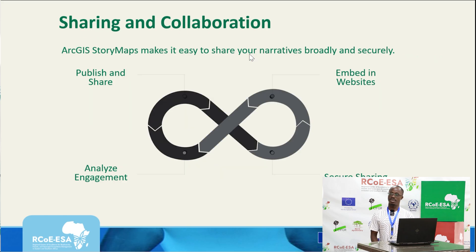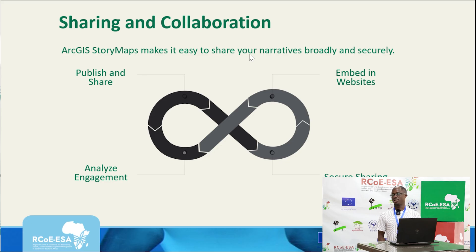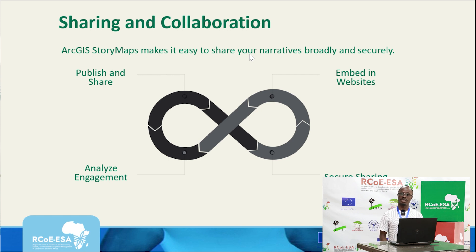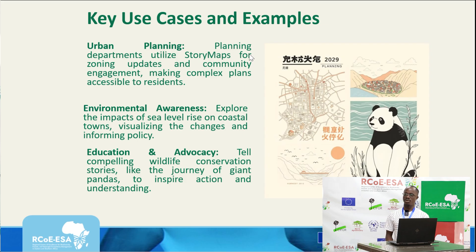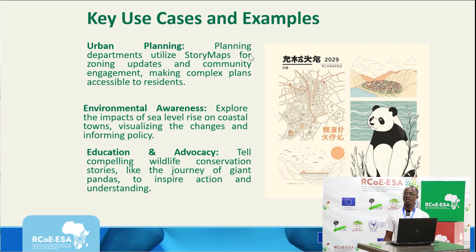For sharing and collaboration, story maps make it easy to share your narratives broadly and securely. You can publish, share, and analyze engagement. You also have secure sharing and can embed stories in your websites for visualization. Some use cases include urban planning with zoning updates and community engagement, environmental awareness, and education and advocacy — for example, telling compelling stories on wildlife conservation journeys and other conservation stories.